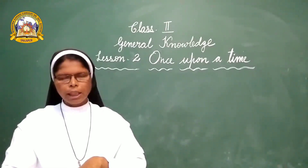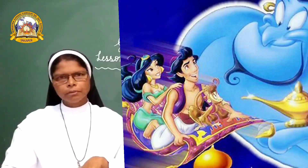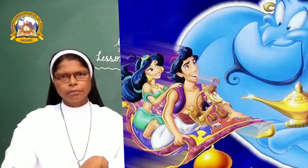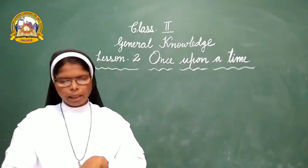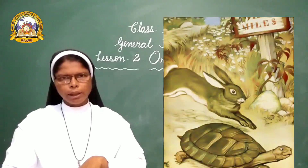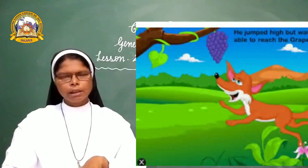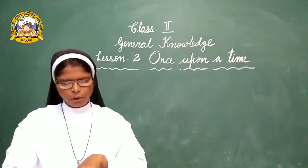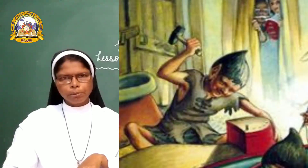The first story is related to Aladdin's Magic Lamp. The second story is related to the Hare and the Tortoise. The third one is the Fox and the Grapes. The fourth one is the Elves and the Shoemakers.